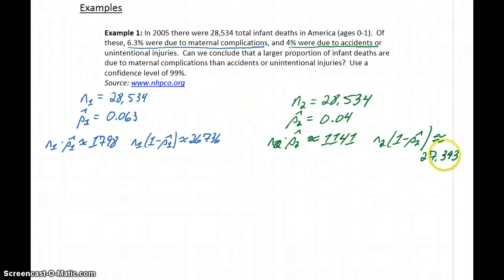So again, in both cases, we have well over the minimum of 10 successes and 10 failures, so the conditions are met to construct a confidence interval.